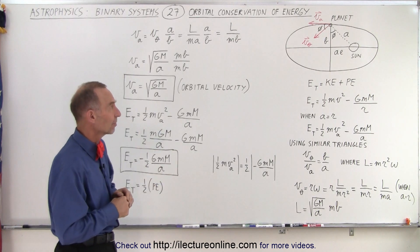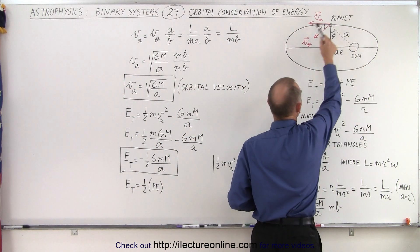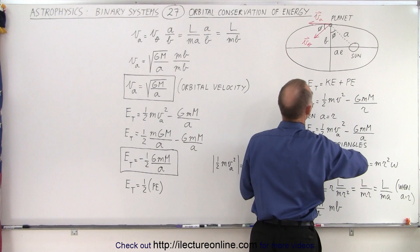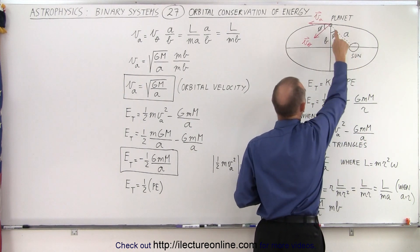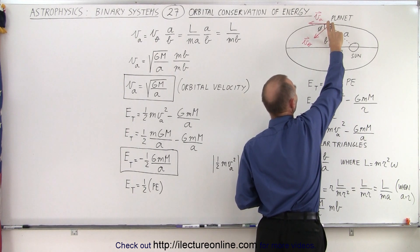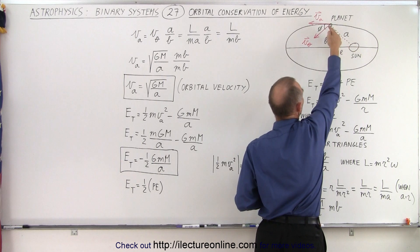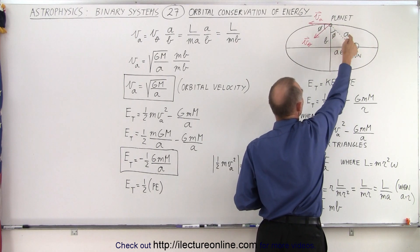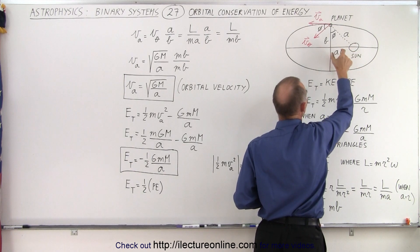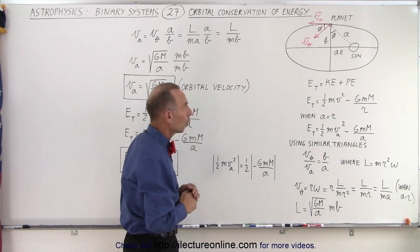So here we have the sun, and here we have the planet orbiting in an elliptical fashion around the sun, the sun being one of the foci. If at the moment the planet is at this location, we can see the distance of the semi-minor axis. The radial distance from the sun to the planet equals A, and the distance from the sun to this point is A times E, where E is the eccentricity of the orbit.